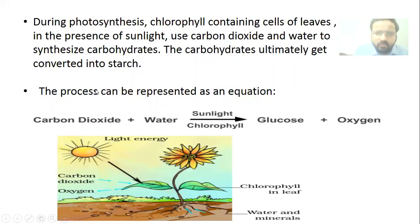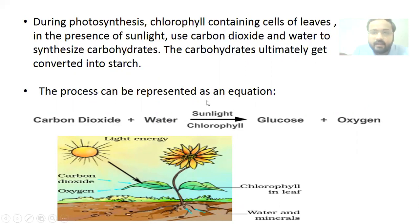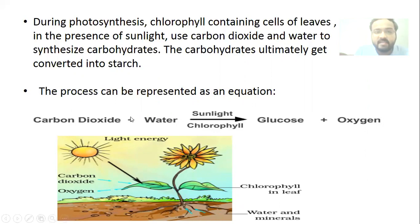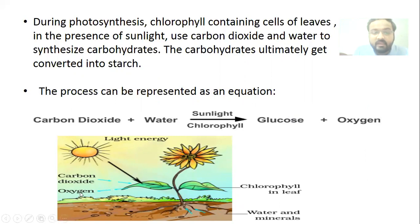The entire process of photosynthesis can be represented as a word equation: carbon dioxide + water, in the presence of sunlight inside the chlorophyll of the leaves, results in the formation of glucose and oxygen. Glucose is the simplest form of carbohydrate. Oxygen is the byproduct formed during photosynthesis, and we utilize this oxygen for respiration.